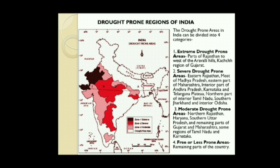315 out of a total of 725 talukas in 99 districts are drought-prone. 50 million people are annually affected by drought, and more than 8 states suffer severe impact of drought. India's drought-prone regions can be categorized into four categories: extreme drought-prone areas such as parts of Rajasthan west of Aravalli Hills and Kutch region of Gujarat; severe drought-prone areas such as east Rajasthan, most of Madhya Pradesh, eastern Maharashtra, interior Andhra Pradesh, Karnataka, Telangana Plateau, north Tamil Nadu, southern Jharkhand, and interior Odisha; moderate drought-prone areas including northern Rajasthan, Haryana, southern Uttar Pradesh, remaining parts of Gujarat and Maharashtra, and some parts of Tamil Nadu and Karnataka; and the fourth, less drought-prone areas comprising the remaining parts of the country.